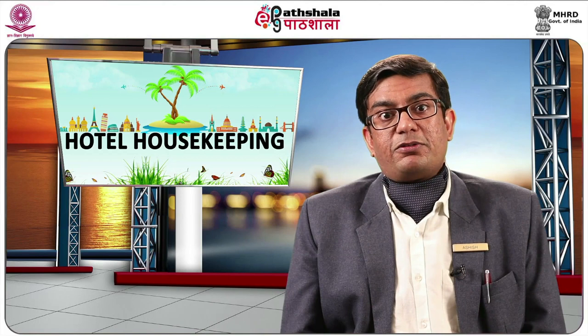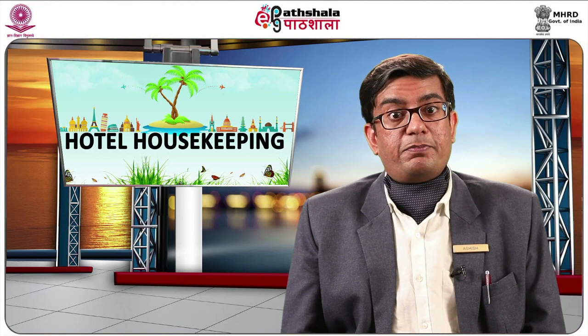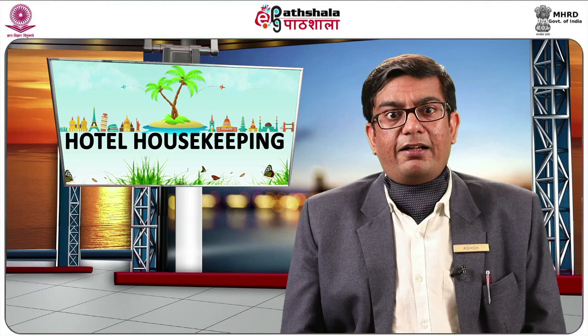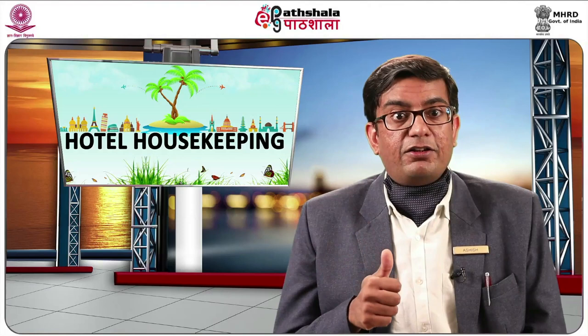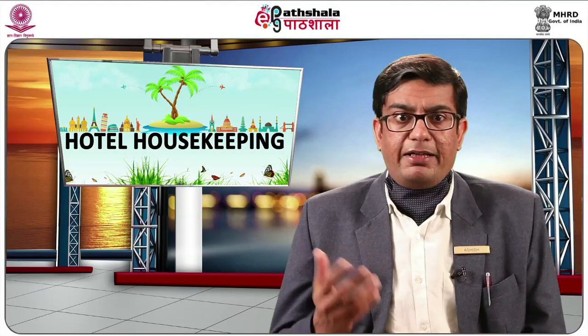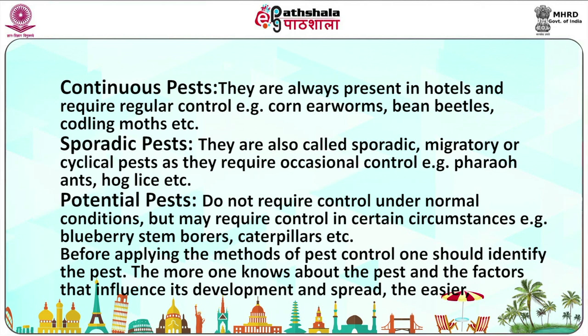Pests are also classified into three categories based on the control needed. These include continuous pests — always present in hotels and requiring regular control, such as corn earthworms, bean beetles, coddling moths, etc. There are sporadic pests — also called migratory or cyclical pests — which require occasional control, such as hog lice, etc. There are potential pests, which do not require control under normal conditions but may need to be checked at certain circumstances, for example blueberry stembodders, caterpillars, etc.